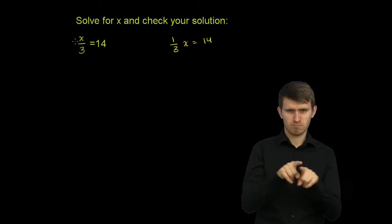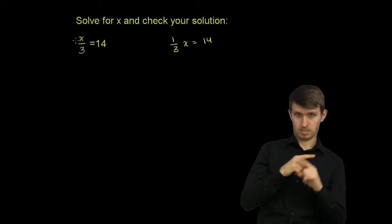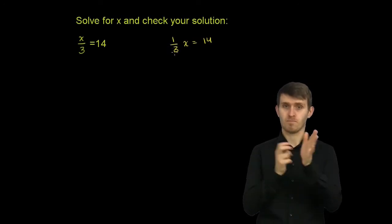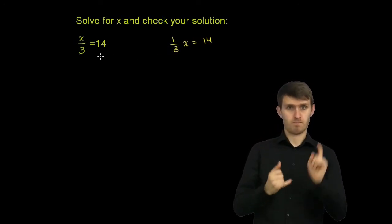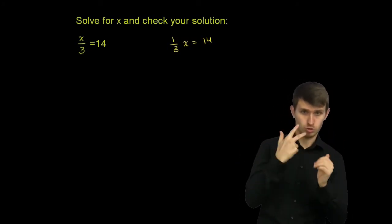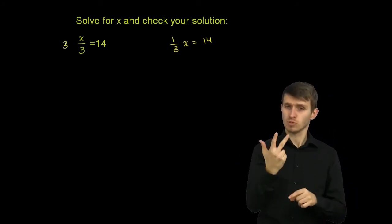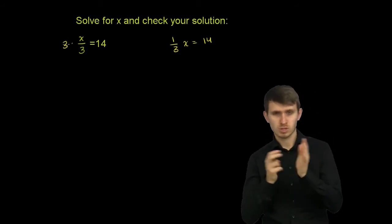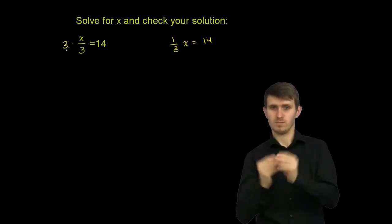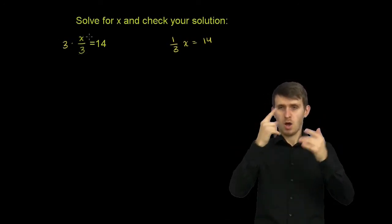Or another way, how can we just have a 1 in front of the x, a 1x, which is really just saying x over here? Well, I'm dividing it by 3 right now. So if I were to multiply both sides of this equation by 3, that would isolate the x. And the reason that would work is if I multiply this by 3 over here, I'm multiplying by 3 and dividing by 3. That's equivalent to multiplying or dividing by 1, and these guys cancel out.